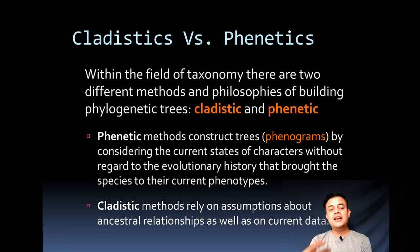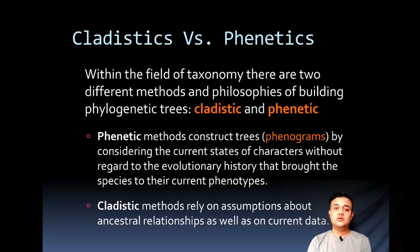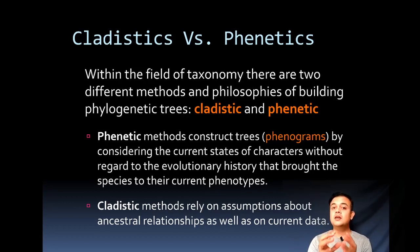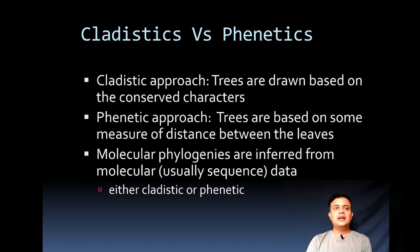Cladistics is very different — it's about assumptions regarding ancestral relationships as well as current data. We have current data, which is morphology, plus ancestral data: the deeply conserved character states. We must identify which character states are conserved and which are not. Only conserved character states are used for phylogenetic reconstruction or taxonomy — that is called the cladistic method.